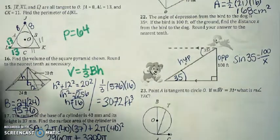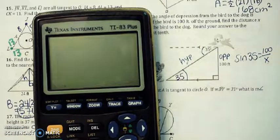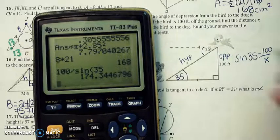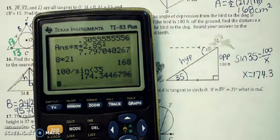we're going to do sine 35 equals 100 over x. Now if you guys remember, in this instance when the variable's in the bottom, these are going to just trade places. So we're going to do 100 divided by the sine of 35, and x is going to end up being 174.3 to the nearest tenth.